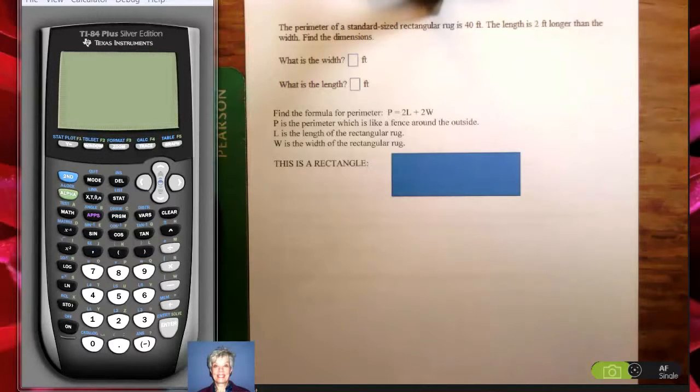Hi, this is your math prof again, Barbara Rademacher, and we're going to do a perimeter word problem. Alright, we just did one and we're going to do another. The perimeter of a standard sized rectangle is 40 feet. The length is 2 feet longer than the width. Find the dimensions.